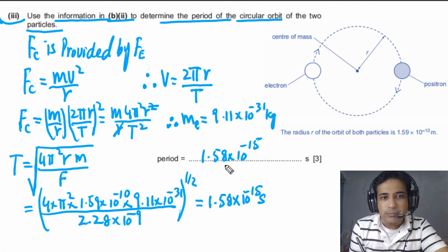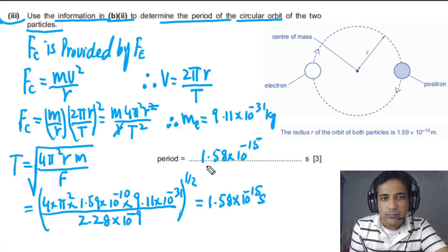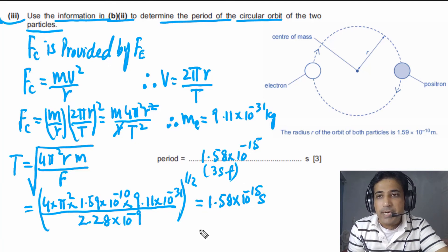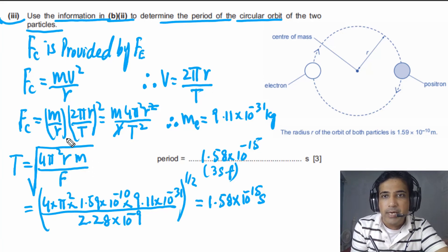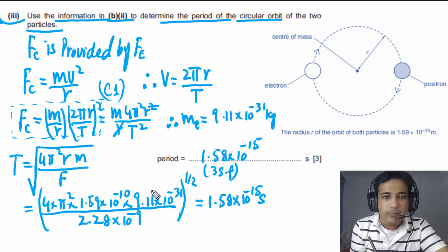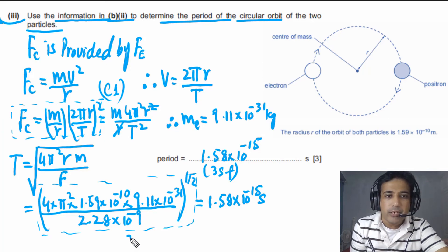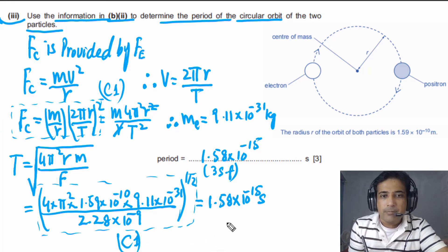The answer is given to 3 significant figures because all the data values have 3 SF — we consider the least number of significant figures. This question has three marks: one C mark for writing the centripetal force formula, one C mark for correctly substituting the values for time period, and an answer mark if you get the correct answer — giving three marks total.